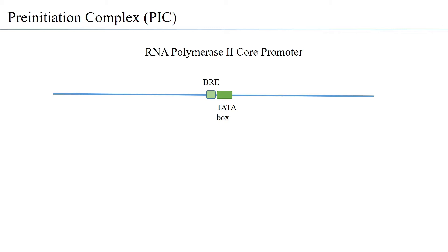Apart from these two upstream elements, there is another cis-acting element right at the transcription start site. This element, called the initiator (INR), actually encompasses the transcription start site. Downstream of the transcription start site at around plus 30 is present another cis-acting element called the downstream promoter element (DPE).